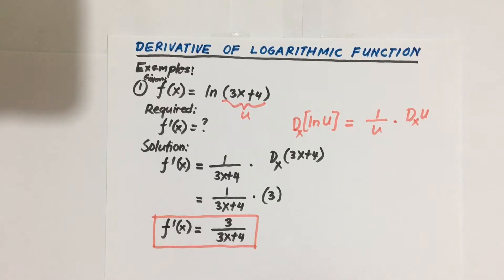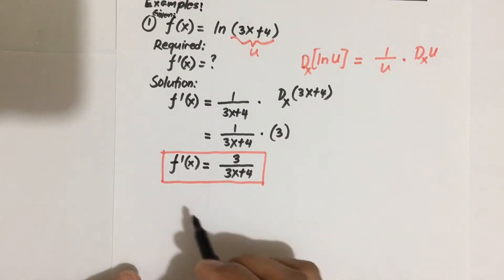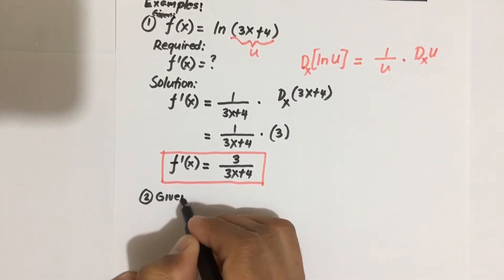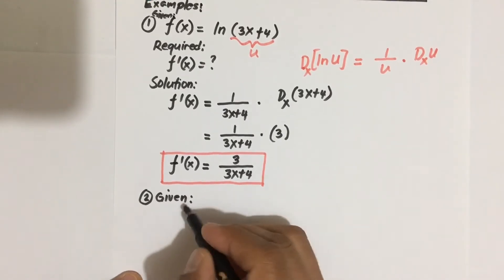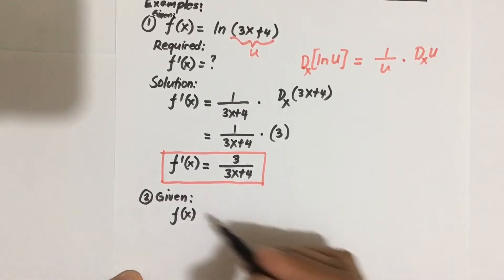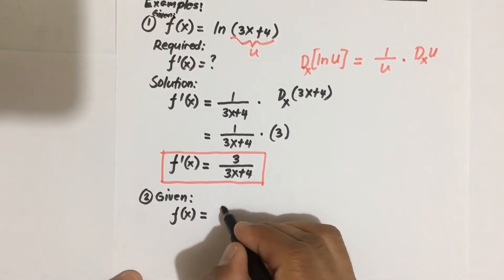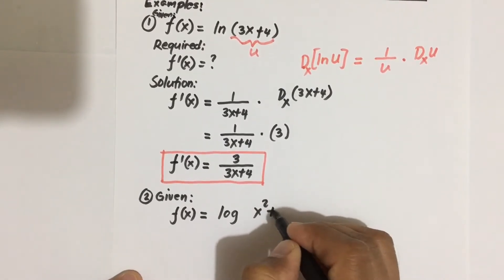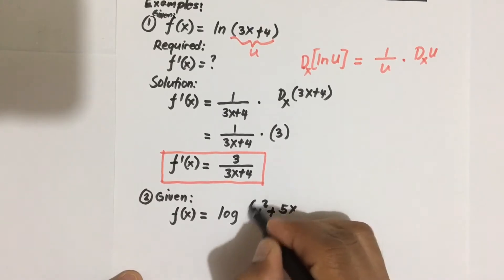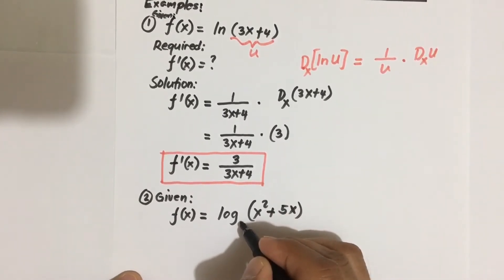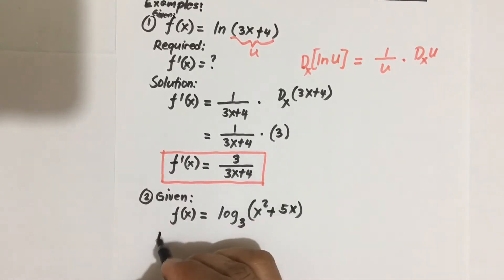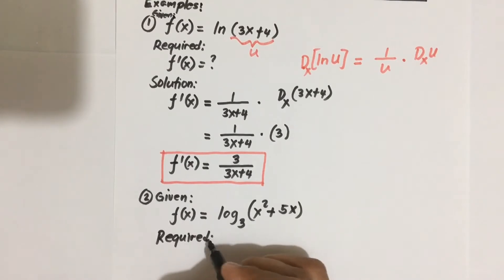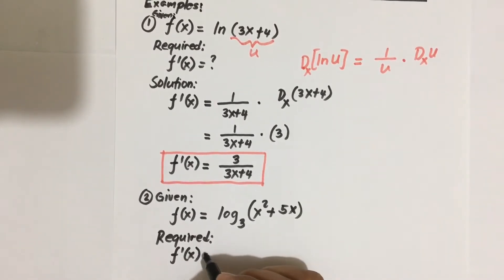For number two, we are given f of X equal to log of (x squared plus 5x) with base equal to 3. We are required to solve for the derivative of this given logarithmic function.